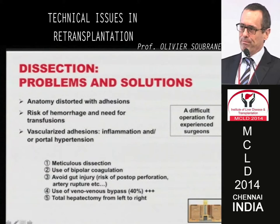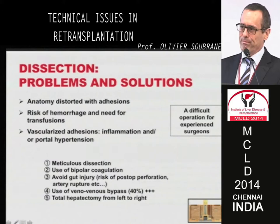If we summarize, re-transplantation is a difficult operation even for experienced surgeons. What are the solutions? A meticulous dissection first. It's obvious that it's better to be meticulous in surgery, but especially in these circumstances of difficult dissection in re-transplantation. I recommend the use of bipolar coagulation instead of monopolar to avoid gut injury, because there is a risk of postoperative perforation of the intestine or artery rupture when there is a leak of digestive fluid. It's sometimes like transplantation of children with biliary atresia with these very vascularized adhesions — the same picture in re-transplant in adults.